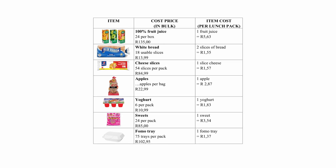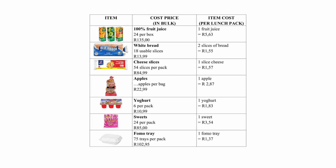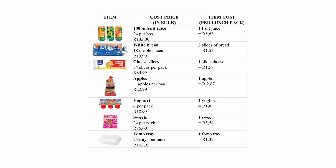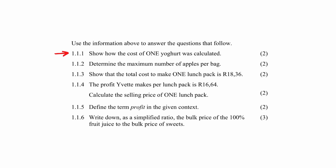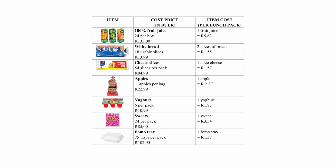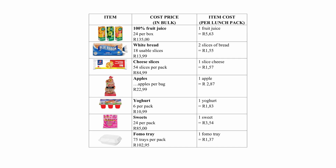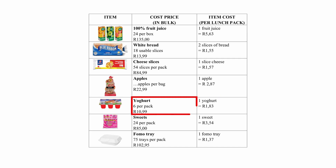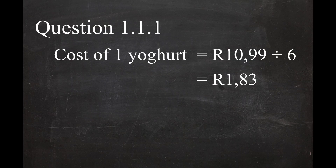You are given the cost price of items for a lunch bag to be sold to learners at a school. In question 1.1.1, you have to show how the cost of one yogurt was calculated. The cost of one yogurt is given as 1.83. The cost of a 6-pack yogurt is 10.99. The item cost of 1.83 is calculated by dividing the bulk price of 10.99 by the number of yogurts per pack.